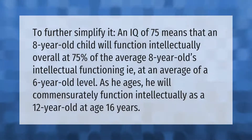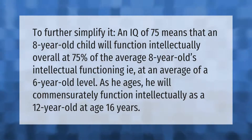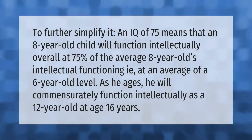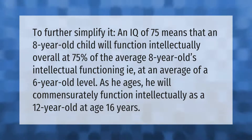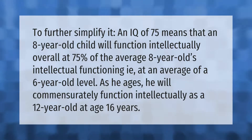To further simplify it, an IQ of 75 means that an eight-year-old child will function intellectually overall at 75 percent of the average eight-year-old's intellectual functioning — i.e., at an average of a six-year-old level. As he ages, he will commensurately function intellectually as a 12-year-old at age 16 years.